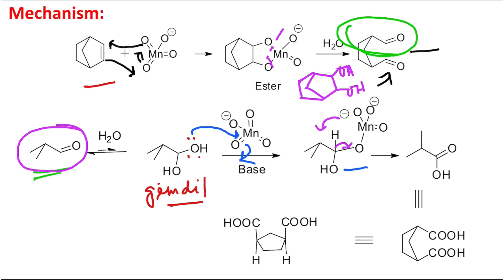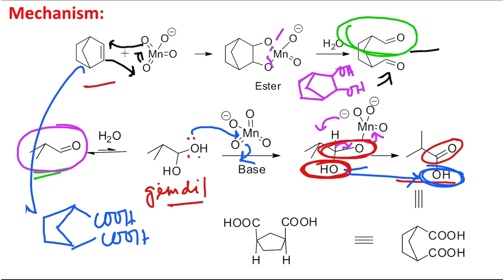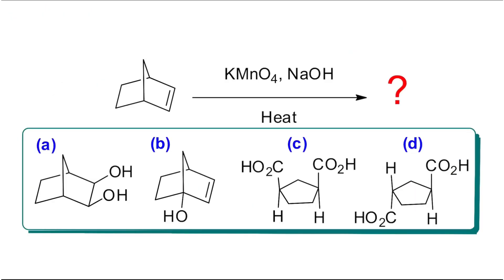In the next stage, the O⁻ abstracts this hydrogen, the lone pair comes in, and manganese gets reduced while this alcohol part gets oxidized. This part ultimately produces a carboxylic acid — the hydroxyl that is left goes there. Since it is a ring compound, this process produces one carboxylic acid on each side, both on the same side. This is the overall mechanism for the process.